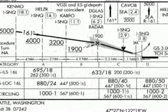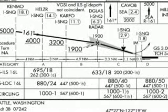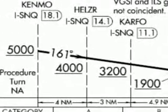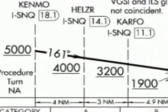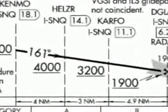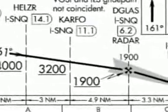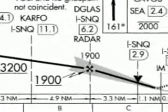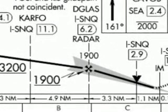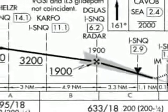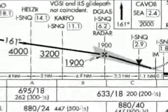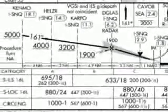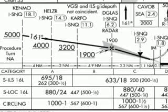The profile view is a side look at the approach from start to finish. This view concentrates on showing elevation changes as you approach the runway. It uses most of the same symbols as the plan view. The principal purpose of the profile view is to show you your altitude and how it will change as you fly the procedure track towards the airport.